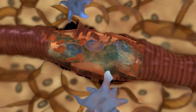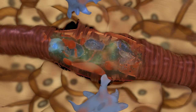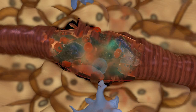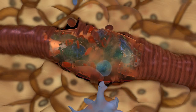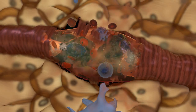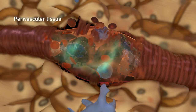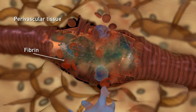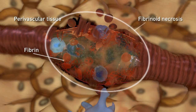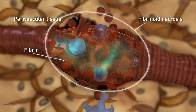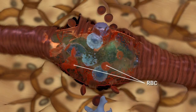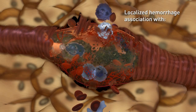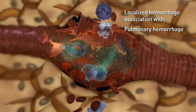ANCA-activated neutrophils and other inflammatory cells, such as lymphocytes and monocytes, infiltrate and destroy the vessel wall. As the inflammatory and necrotizing process extends into the perivascular tissue, fibrin is formed by coagulation factors in plasma. This produces the appearance of fibrinoid necrosis. Injury to the vessel walls can result in localized hemorrhage; for example, extravasation of red blood cells may be associated with pulmonary hemorrhage or hematuria.